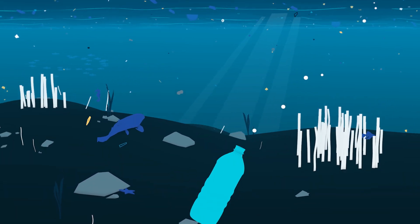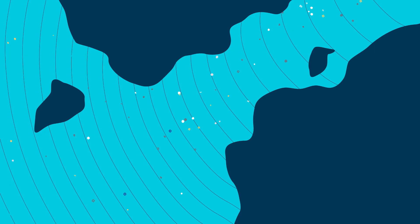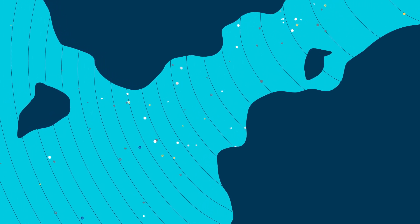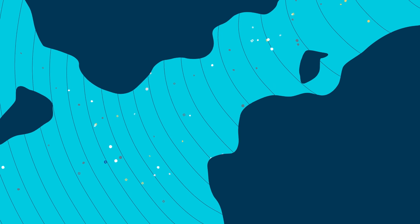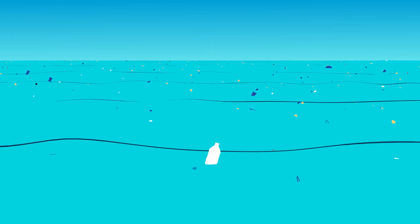Our oceans are filling with plastic. But where does it come from? The answer? Rivers, primarily. Every day they carry not just water and sediments, but also lots of plastic into the ocean.